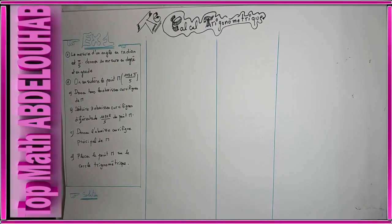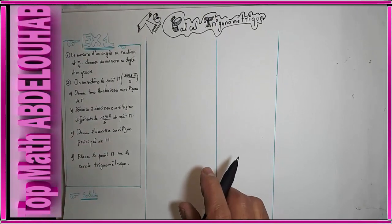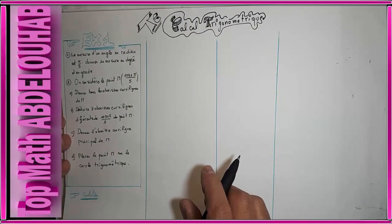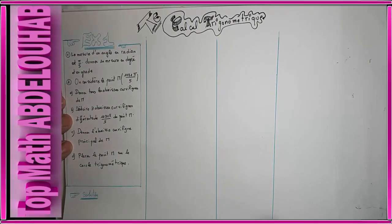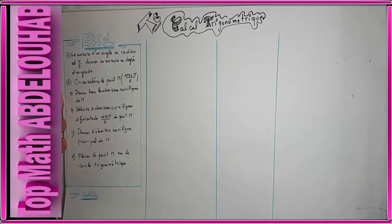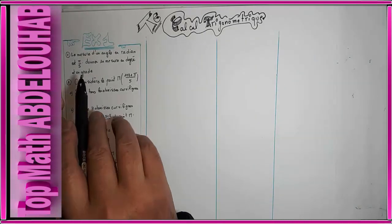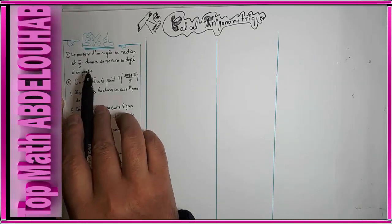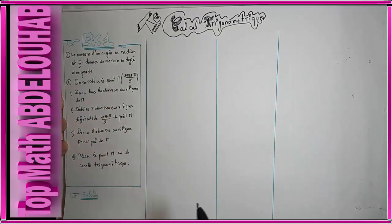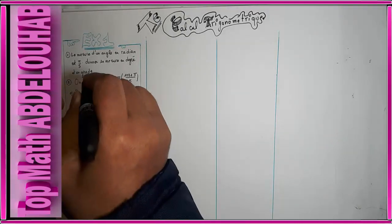Bismillah rahman rahim, al-salat wa salam. Nous commençons le calcul trigonométrique pour les troncs communs. Avec l'exercice 1, donc la première question : la mesure d'un angle en radian est π/5, donner sa mesure en degré et en grade.